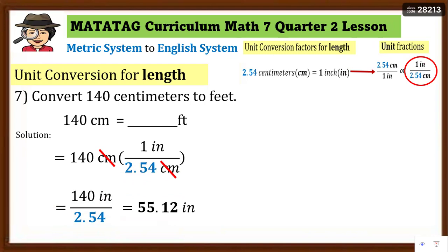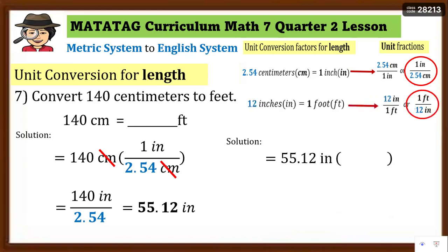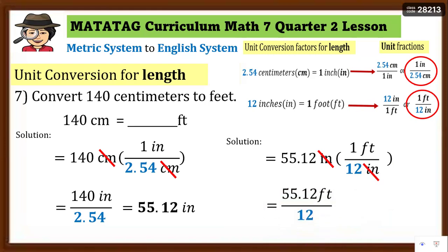But since feet ang hinihingi sa problem, hindi pa tayo nakakaabot dun sa sagot. Gagamit ka pa ng another unit fraction. Copy mo yung 55.12 inches, i-multiply mo sa one foot over 12 inches para ma-change mo yung inches to feet. Cancel 'inches,' multiply one foot times 55.12 — divide by 12 — that is 4.59 feet. So 4.59 feet ay may katumbas na 140 centimeters.